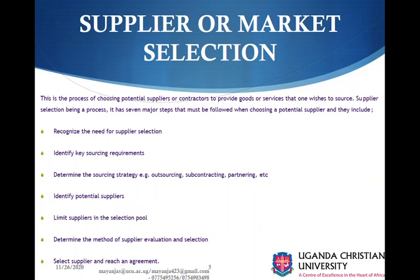Point number four: identify potential suppliers. Out of a list of suppliers and competition, you're able to pick up the best — narrow down. Like in job interviews, there are jobs where you go and there are over one thousand applicants, but the company goes on narrowing down to the top ten, to the top three, then top two, and then they choose one — or maybe they want two out of the one thousand. That is a similar process that we are going through right now.